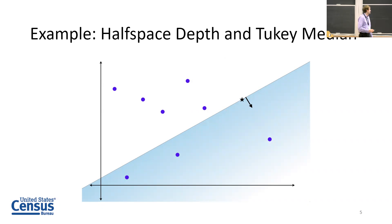We're going to count the number of data points in the halfspace. In this case, for this particular halfspace we have three data points. But we're going to consider all the possible halfspaces and find the one with the least number of data points. This halfspace right here has zero data points, so therefore the halfspace depth is zero.